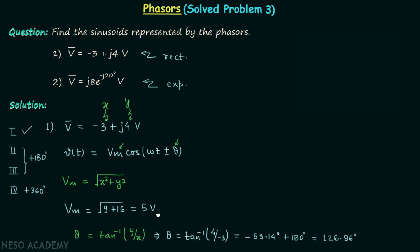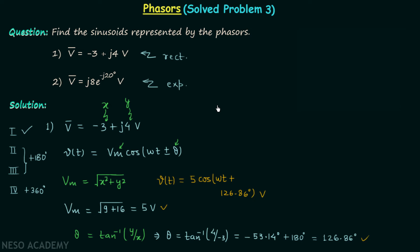We have obtained Vm = 5 volts and θ = 126.86 degrees. Therefore, the corresponding sinusoid is v(t) = 5 cos(ωt + 126.86°). This is the answer for the first phasor.